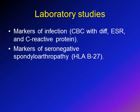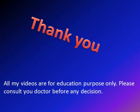Laboratory studies are much less commonly used than imaging. If infection is suspected, obtain markers such as CBC with differential count, sedimentation rate, and C-reactive protein. If seronegative spondyloarthropathy such as ankylosing spondylitis is suspected, HLA-B27 can be obtained. Part two of this lecture will cover specific causes of back pain in children.